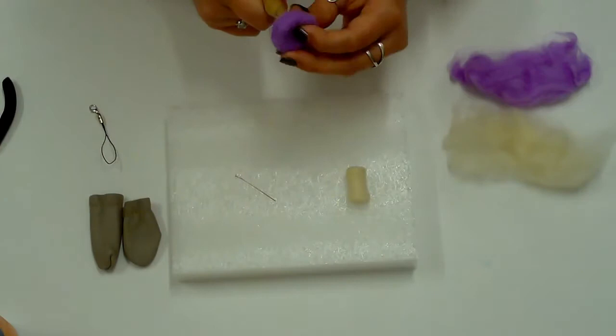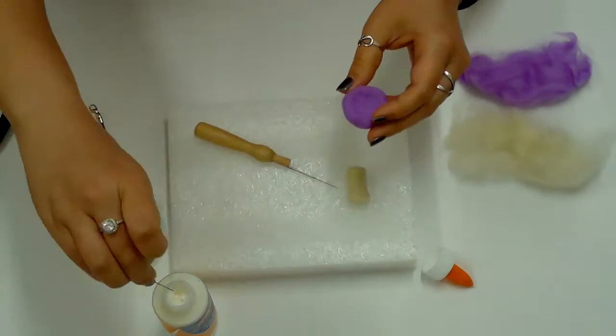Before attaching the stem to the mushroom top, attach the head pin. Use the needle to make a hole. Coat the head pin in fabric glue and insert into the bottom of the mushroom.